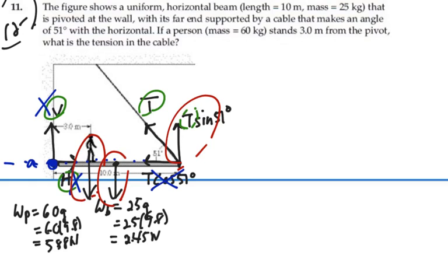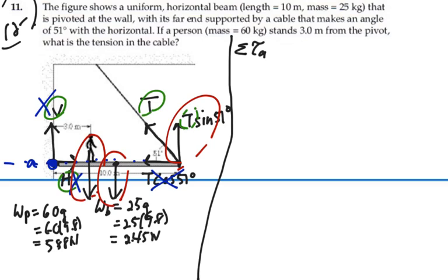These forces each have their respective moment arms of 3, 5, and 10. Setting up the summation of all torques about point A equal to zero is good to know.